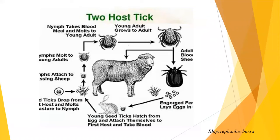Two-host ticks need to use the host twice. The larvae go to the first host, engorge, shed off, moult to nymphs. The nymphs then go to a second host, suck blood, moult, and become adults. This is how two-host ticks complete their life cycle. An example is Rhipicephalus.